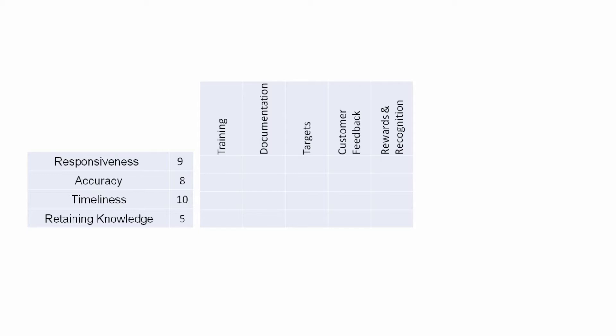Please remember this is an example, so I am considering only 5 CTQs. There could be 10, 15, or 20 CTQs which you can identify through your QFD. The next thing is to establish the relationship between what the customer wants and how we are going to meet it. On the rating scale, a strong relationship gets a score of 9, a medium relationship gets a score of 3, and a weak relationship gets a score of 1.